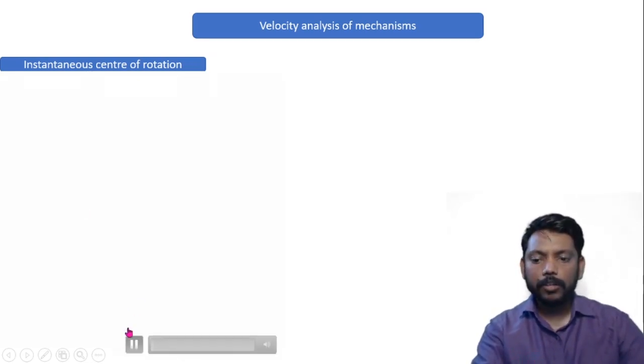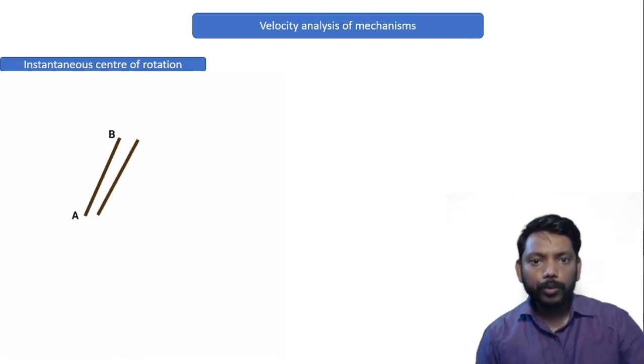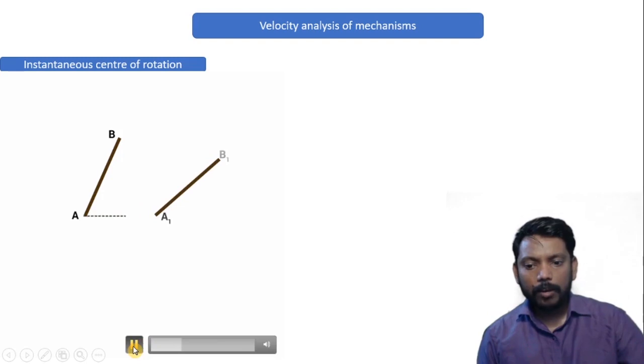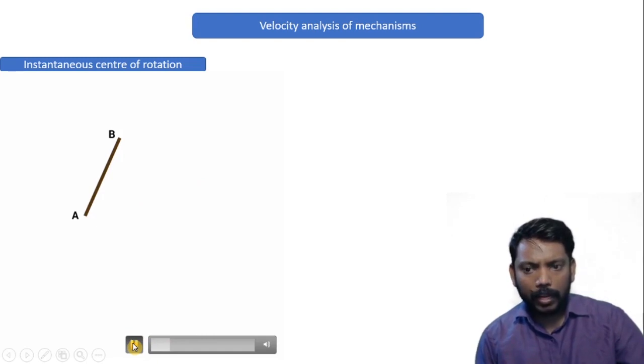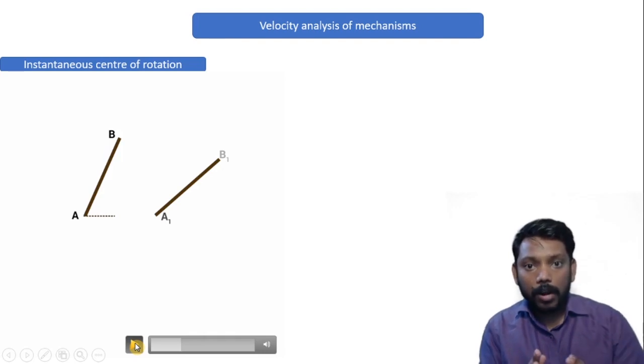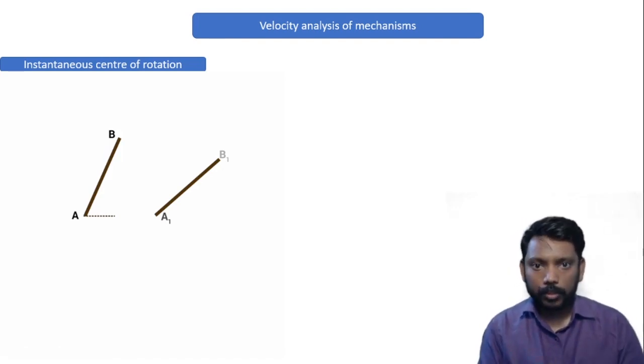For that, observe a very simple animation. So here we are having a link AB and link AB is moving to a new position, let's say the position is A1, B1. If I have played the video again, you will see that the link AB is in a new position A1, B1, but the motion is rotary motion.